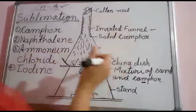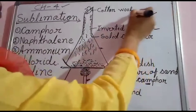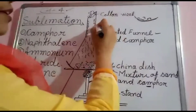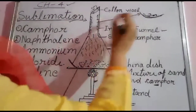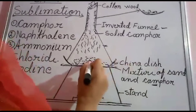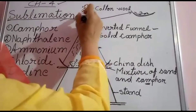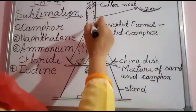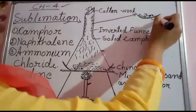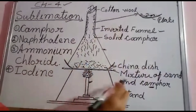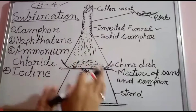After the camphor vapor is deposited on the inside of the funnel, we invert the funnel again and take out the camphor by scratching with a spoon or knife into a plate. In this way, camphor gets separated from the mixture of sand and camphor — camphor directly changes into vapor and gets condensed on the cold surface of the funnel.